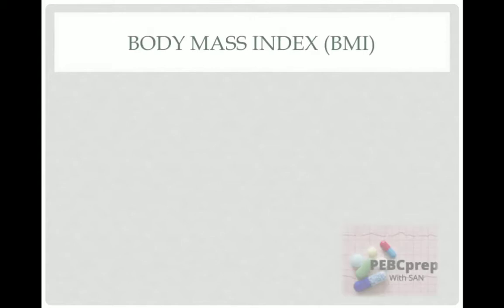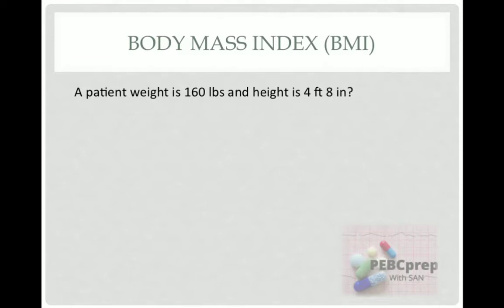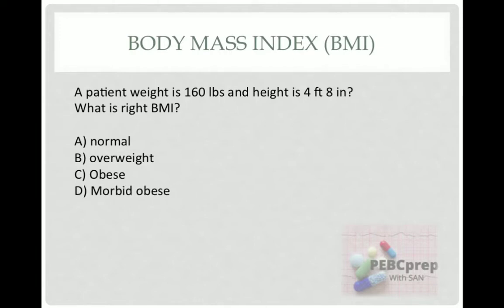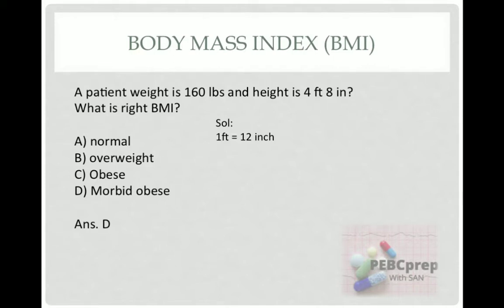For body mass index, sample questions come in the exam. For example: a patient's weight is 160 pounds and height is 4 feet 8 inches. They are asking what is the right BMI — A: normal, B: overweight, C: obese, D: morbid obese. You have to calculate the BMI to answer this question. The answer is D. The solution requires converting all units into kilograms and meters squared.